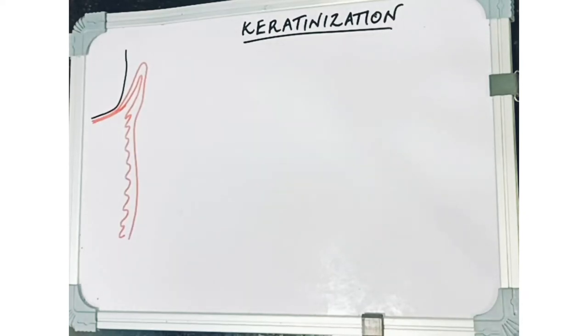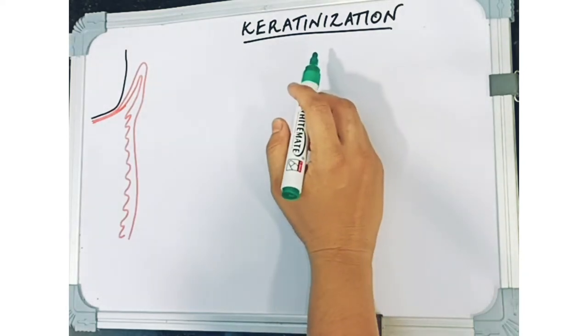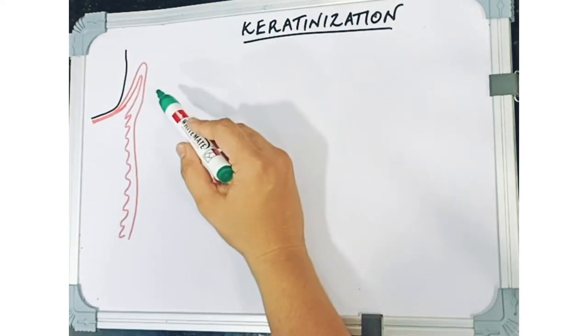Hello everyone, welcome back to Pristine Smiles. We are currently covering the topic of gingiva. In the previous video, we saw the microscopic and macroscopic anatomy of gingiva. If you haven't watched it yet, please click on the link below and watch it. Today we are going to be talking about keratinization.